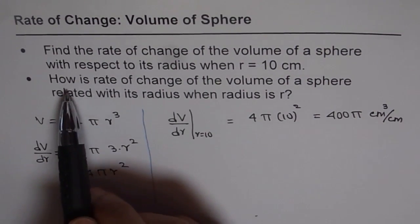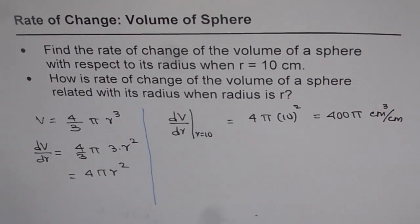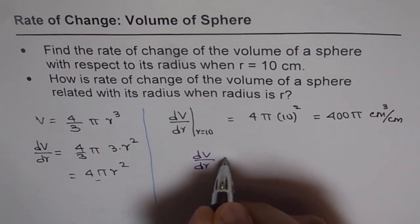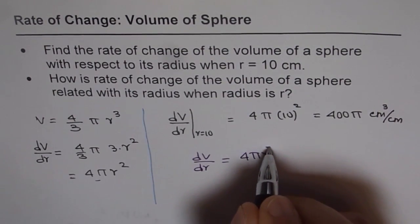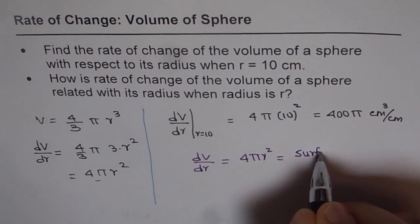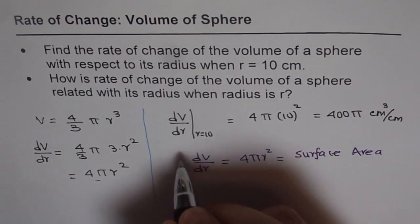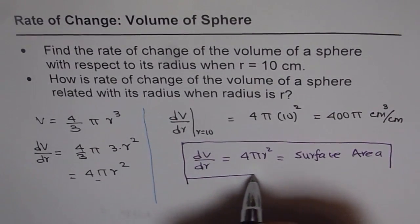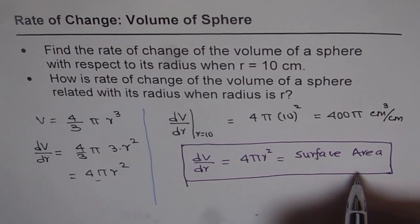Now Part B is: how is rate of change of volume of a sphere related with its radius when radius is r? That means a general expression, which we found, which says dV/dr — rate of change of volume with respect to radius — is 4πr², which is the surface area of the sphere. So that is how the two are related. Rate of change of volume at any instance with respect to radius is the same as its surface area at that instance.